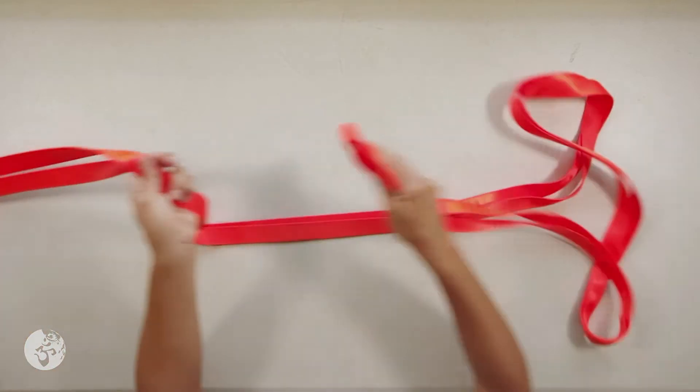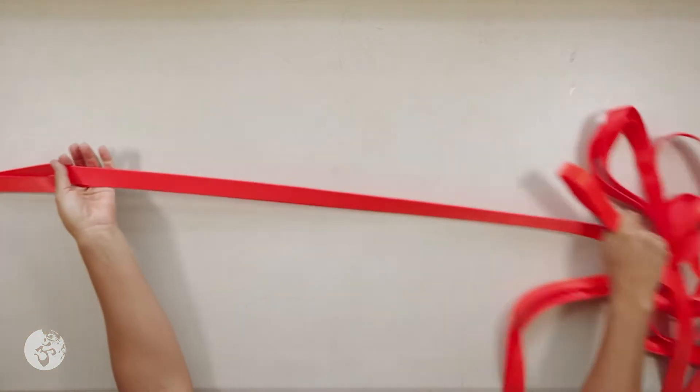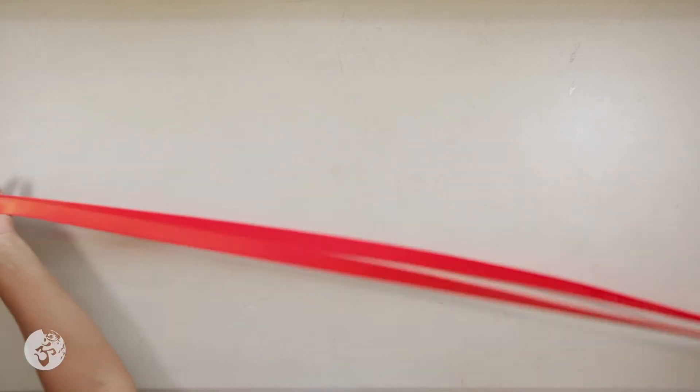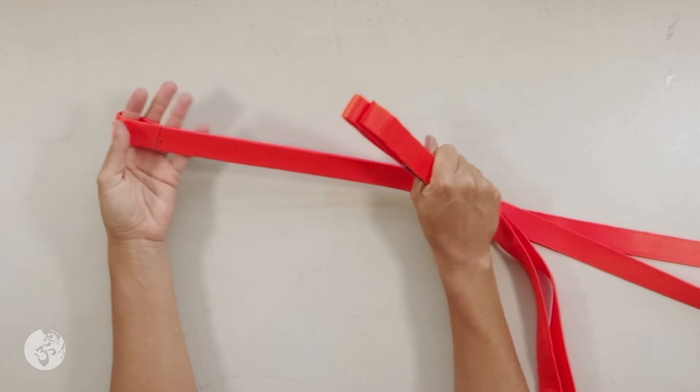Now I'm going to take my time to find the middle of the line. So I just keep the loop and the end of the slackline in one hand and find here the middle side.